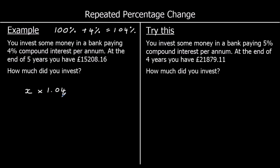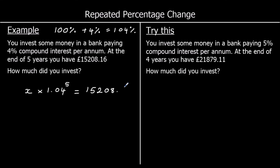We're going to do this 5 times because we've got 5 years. Instead of writing times 1.04 five times, we can write x times 1.04 to the power of 5. That's going to add on 4% a year for 5 years, and we should get our original amount of money with 4% added on for 5 years equal to £15,208.16.